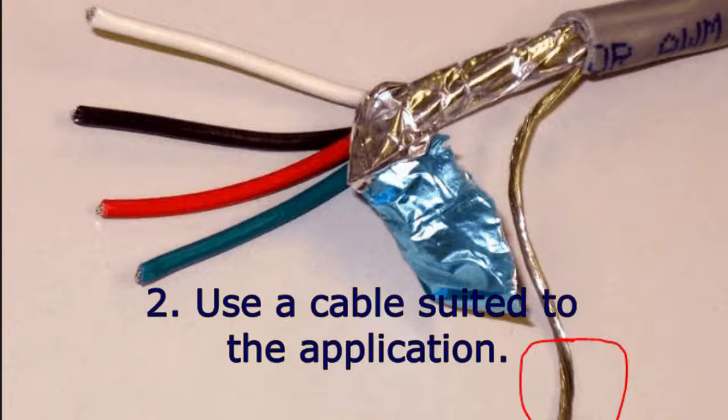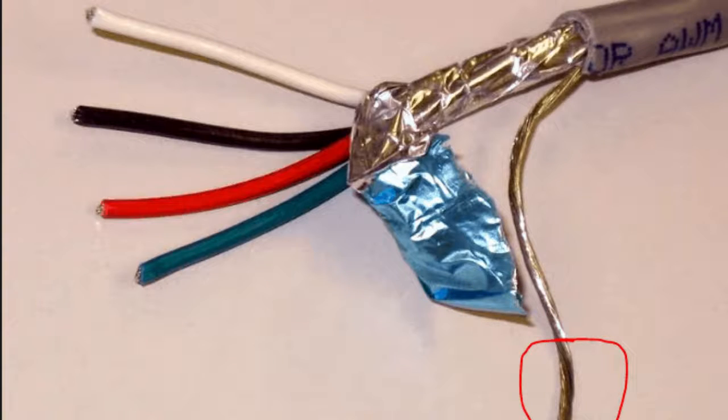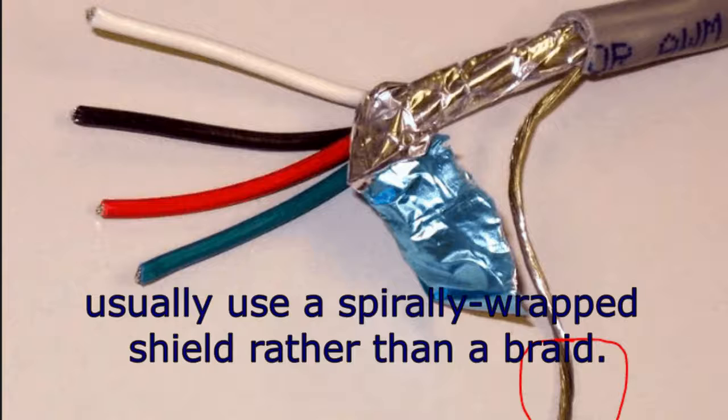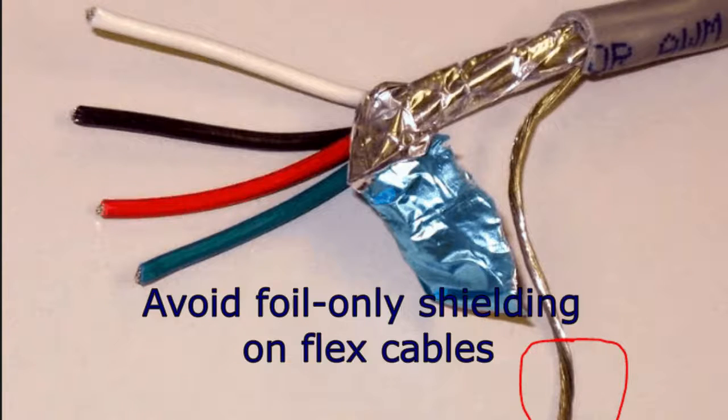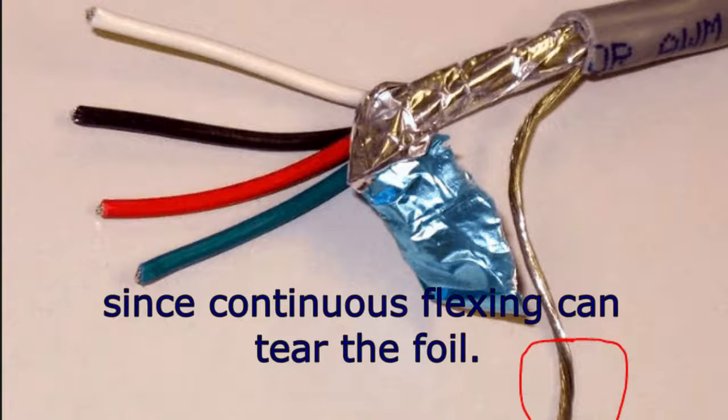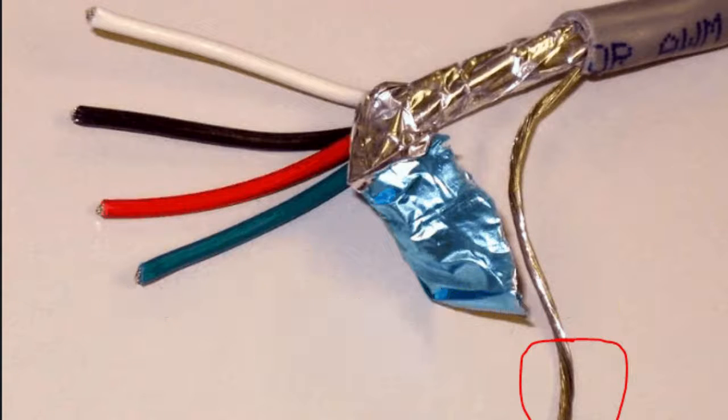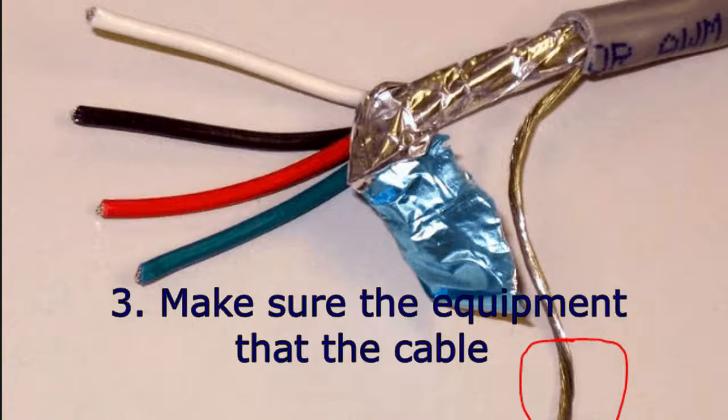Two, use a cable suited to the application. Cables that experience repeated flexing usually use a spirally wrapped shield rather than a braid. Avoid foil-only shielding on flex cables since continuous flexing can tear the foil.